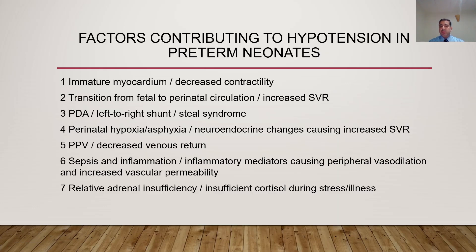Any disturbance in this physiologic transition may result in hypotension that persists and causes problems. Contributing factors include myocardial immaturity — in extremely premature babies, immaturity of the myocardium and decreased contractility will result in hypotension. Problems with the transition from fetal to perinatal circulation, where the expected increment in systemic vascular resistance fails to occur, also cause hypotension.